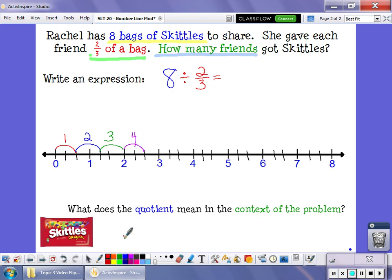And I'm going to keep grouping these into two-thirds until I get all the way to eight bags of Skittles. So two-thirds, seven. This is my eighth friend. This is my ninth friend.